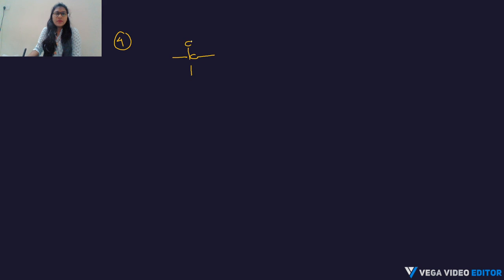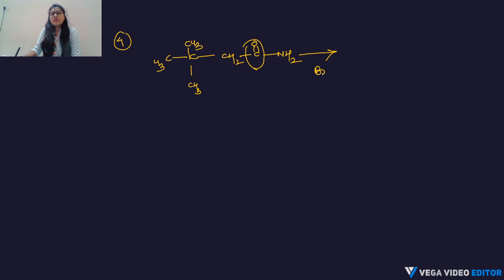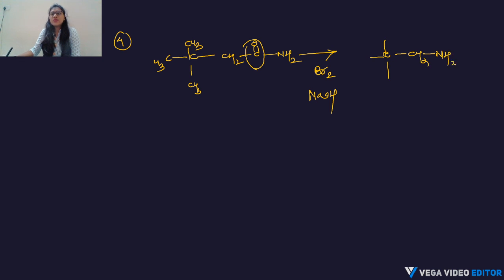The fourth reaction: the starting material has three methyl groups and a CH₂–CO–NH₂ chain. In the presence of Br₂ and NaOH, after removal of the carbonyl group by Hofmann degradation, the product is (CH₃)₃C–CH₂–NH₂ — the primary amine with one fewer carbon.